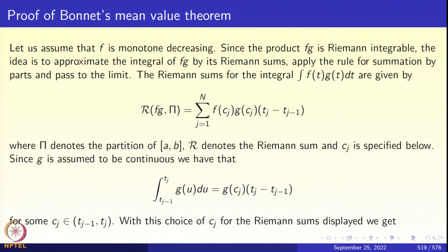Now let us get to the proof of Bonnet's mean value theorem. Assume that f is monotone decreasing. Monotone functions are Riemann integrable, and we take a continuous function g such that fg is Riemann integrable. The idea is to approximate the integral of fg by its Riemann sums, which are finite sums. These finite sums involve a choice of a point c_j in each partitioning interval, and we will apply Abel's summation by parts formula to these sums.